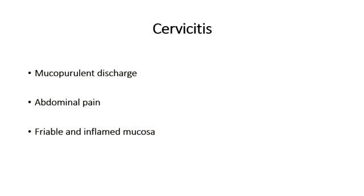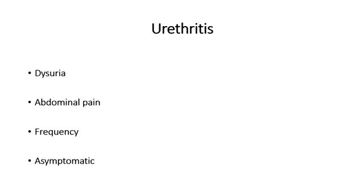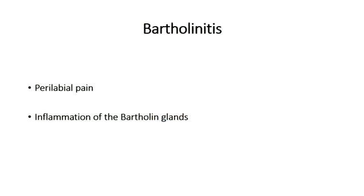In women, manifestations of gonorrhea infection include cervicitis, urethritis, bartholinitis, pelvic inflammatory disease, and perihepatitis also known as Fitzhugh-Curtis syndrome. The cervical area may appear inflamed and the mucosa may be friable on examination. Urethritis presents with painful urination, urinary frequency, and abdominal pain. Importantly, patients may be completely asymptomatic. Bartholinitis is inflammation of the Bartholin glands, presenting with perilabial pain, discharge, and gland inflammation.